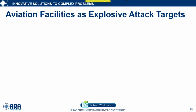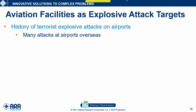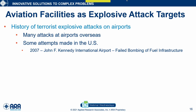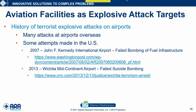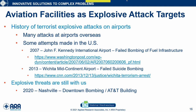Aviation facilities have a history of explosive attack, and many of these attacks have occurred overseas. There have been a few attempts in the U.S. — the more recent ones being in 2007 at JFK airport, a failed bombing of fuel infrastructure, and in 2013 at Wichita Mid-Continent Airport, a failed suicide bombing. We actually did the blast assessment prior to that event — I did the site survey — so we were surprised when we saw it in the news. There are still explosive threats with us, as evidenced by the Nashville downtown bombing late last year.